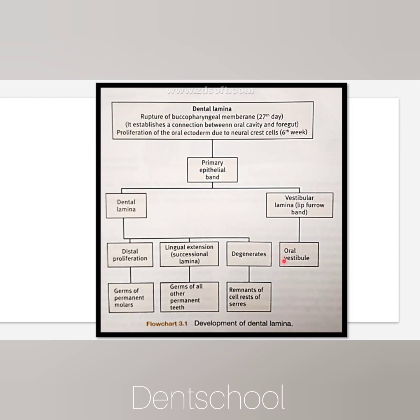The vestibular lamina gives rise to the oral vestibule, and the dental lamina has two processes: distal proliferation and lingual extension. The distal proliferation gives rise to non-succedaneous teeth—the permanent molars—and the lingual extension gives rise to succedaneous teeth.